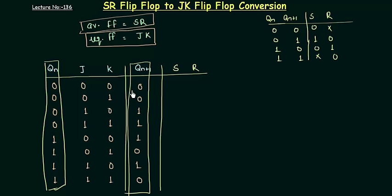When both of them are 0, it means the first case. S is 0, R is don't care. Again both are 0, so 0 don't care. 0, 1 gives us 1, 0. Again 1, 0. 1, 1 gives us don't care 0. Don't care 0. 1, 0 gives us 0, 1. So 0, 1, 1, 1 don't care 0. 1, 0, 0, 1.